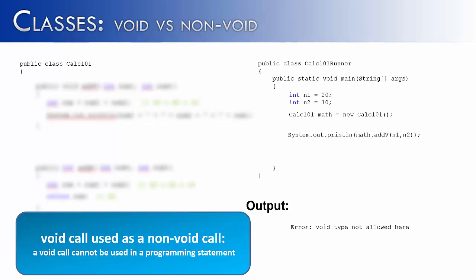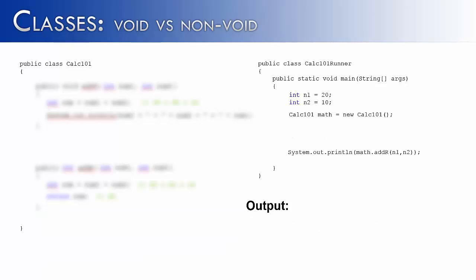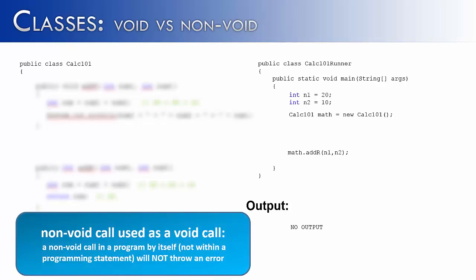Now let's see if the opposite is true. What if I took a non-void method like addR and used it like a void method, meaning I'm going to make it stand alone by itself. So I just say math.addR n1 n2. Is this going to cause an error? No it's not. In this case, it wouldn't print out anything. It would bring 30 back to the program, but then there's no system.out.println to handle it, or no if statement, or no assignment statement to handle it.